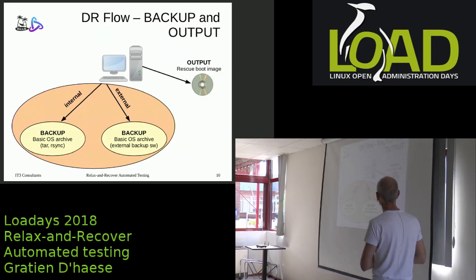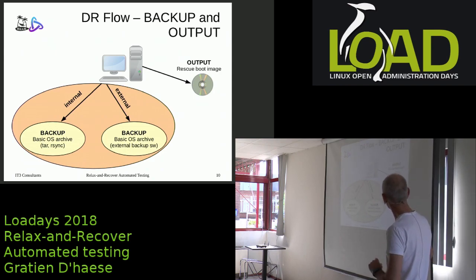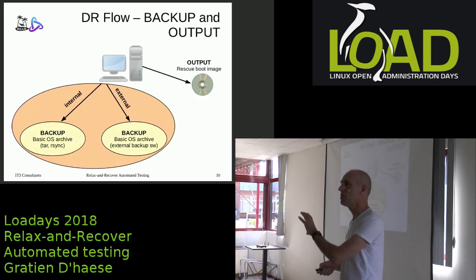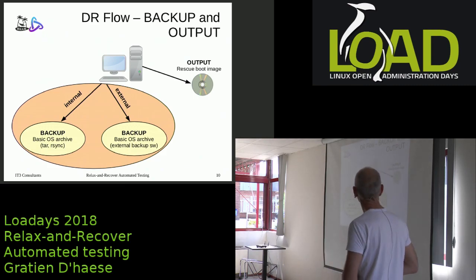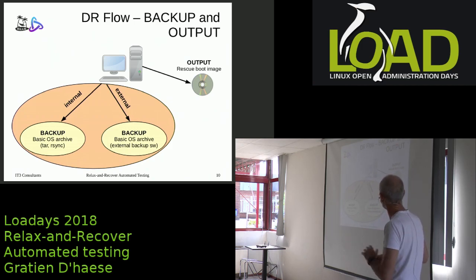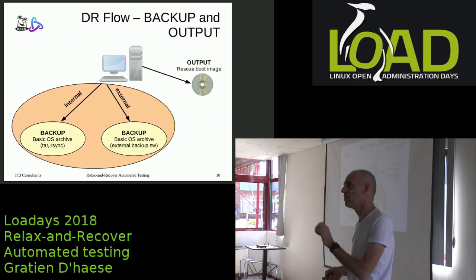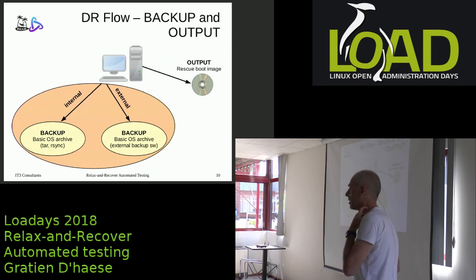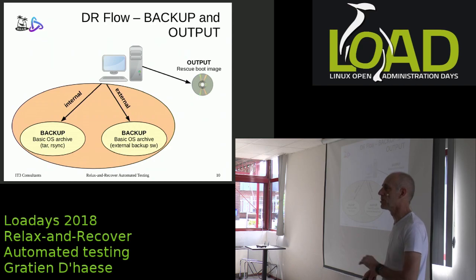The disaster recovery flow basically looks like this: you have your system, the output stream is your rescue image — a bootable image that can be an ISO, USB, or PXE booting, all supported. Then you have the backup stream: the internal stream uses tar or rsync by default, and you have external ones where you define which backup software to use. If it's not integrated, there is a 'request restore' generic flow where you just want the rescue image and do the restore yourself.